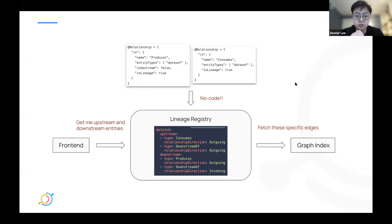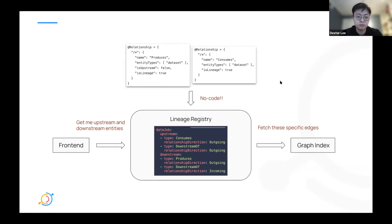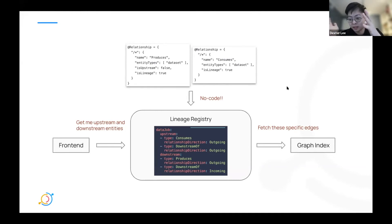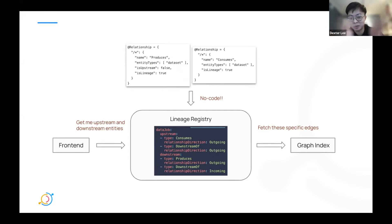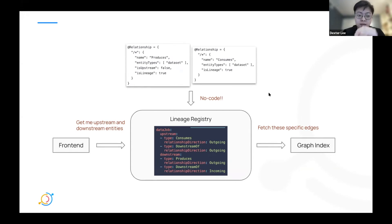We add metadata about each relationship so we can build a lineage registry that says: given an entity type, what are the upstream datasets and how do we query for them in the graph database? For example, in the data job lineage registry: to get the upstream entities of a data job, you look for 'consumed' edges — what this data job consumes are its upstreams — as well as 'downstream of' edges. The same logic applies for finding downstreams: here are the edges to look for in the graph database.